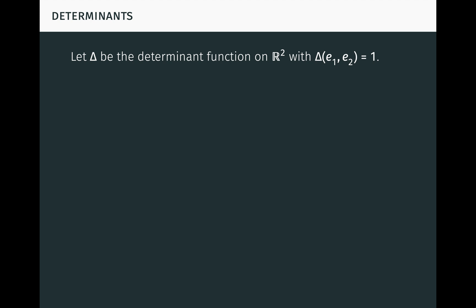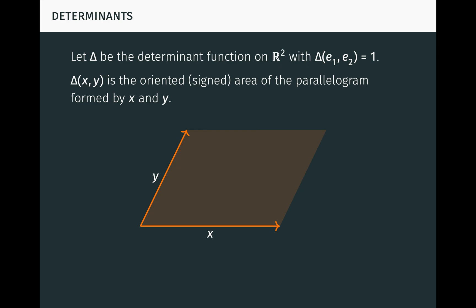To start, let delta be the determinant function on the plane R², with delta of e1, e2 equal to 1, where e1 and e2 are the standard basis vectors. Then we know from a past video on determinants and volume that delta of x, y is the oriented or signed area of the parallelogram formed by the vectors x and y, as seen here. The absolute value of delta x, y is just the ordinary area.